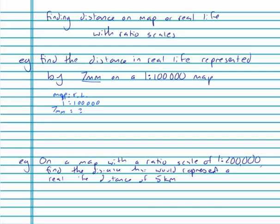So these sorts of questions, nice and easy. 1 to 7, well that's times by 7, so multiply by 7 on the other side, and we've got 7mm on the map equals 700,000mm in real life.